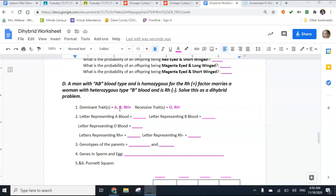that our dominant traits are going to be A, B, and Rh positive, and our recessive traits are going to be O and Rh negative. Now we're going to assign letters. A will represent the A blood, B for B, O for O, and then typically for our Rh we do a plus sign and a minus sign.